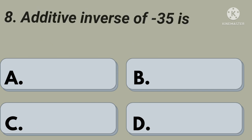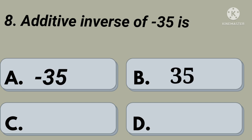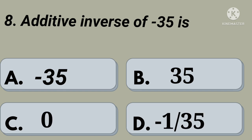Eighth question: additive inverse of minus 35 is. Option A: minus 35, option B: 35, option C: 0, option D: minus 1 by 35. Your time starts now. Right, option B: 35.